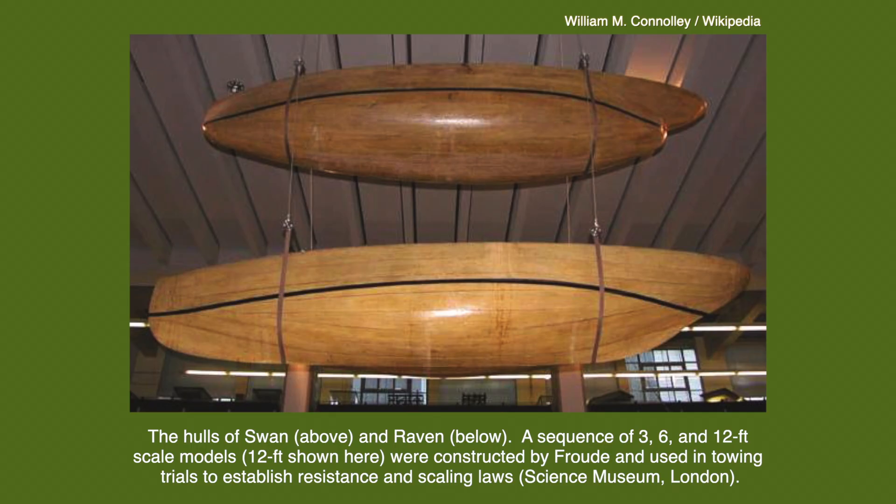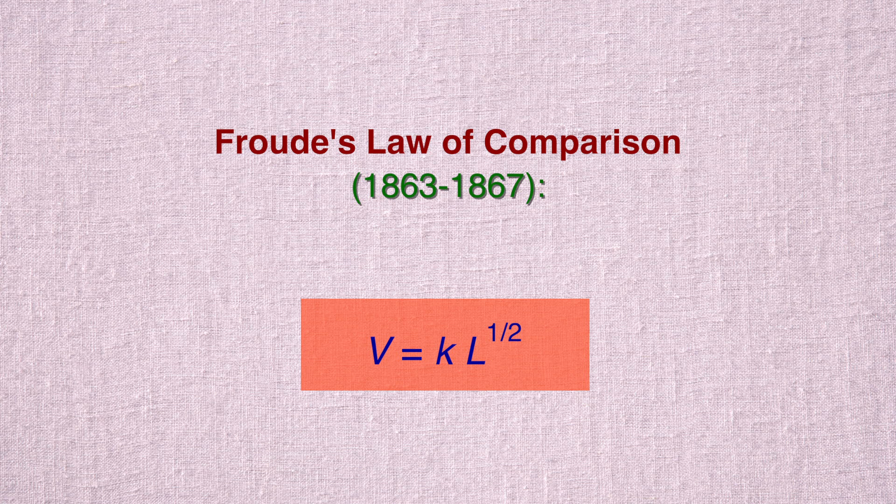Froude's major work, published in 1861, had dealt with the hydrodynamics of ship stability. Between 1863 and 1867, Froude showed that scaling between model and prototype was possible only when the speed V of the ship was proportional to the square root of its length, L. He called this concept the law of comparison.